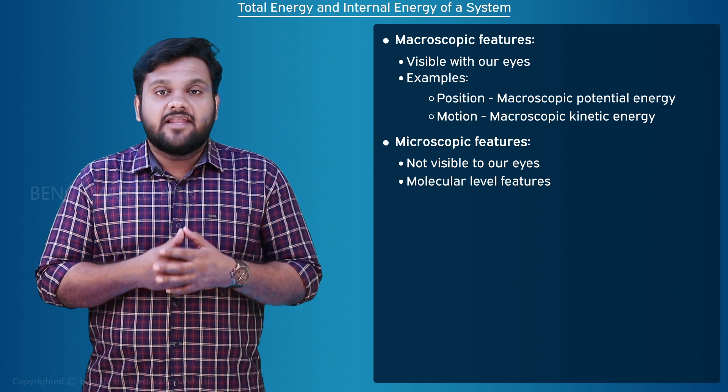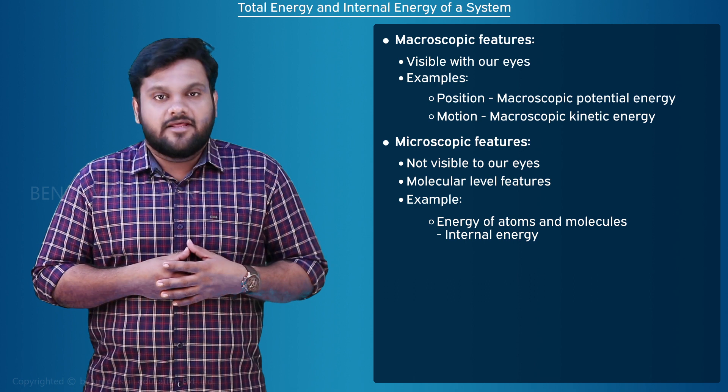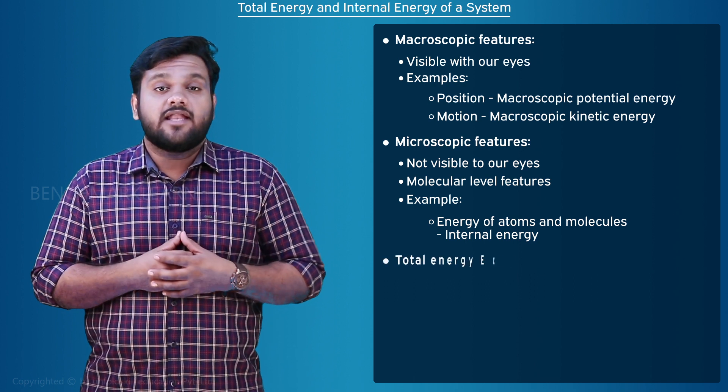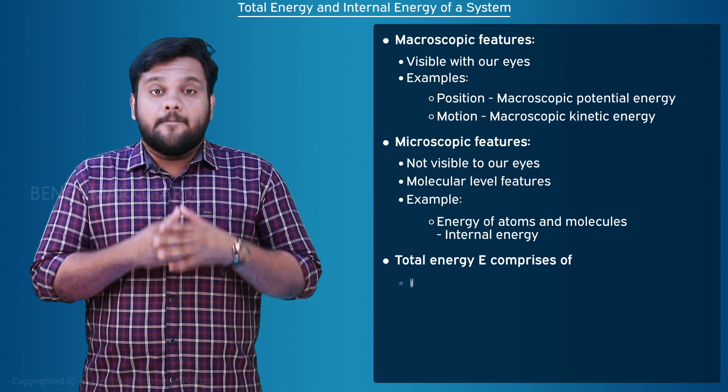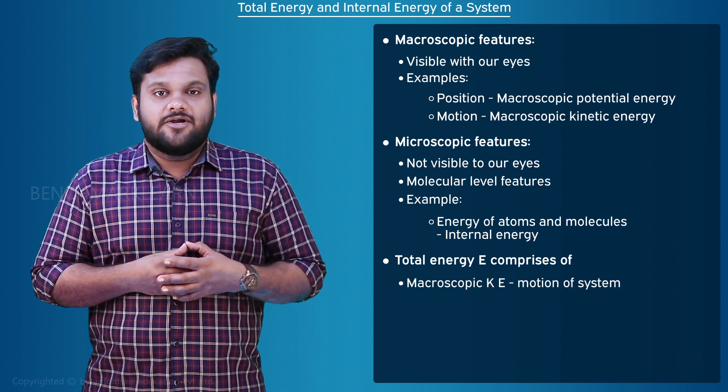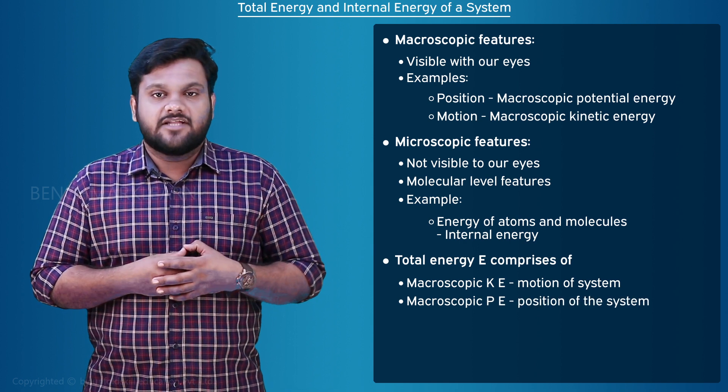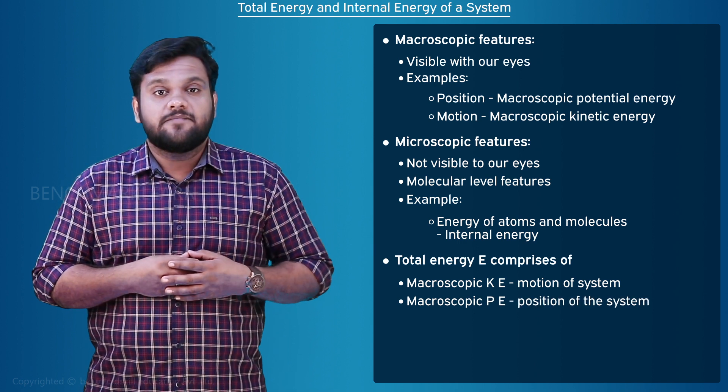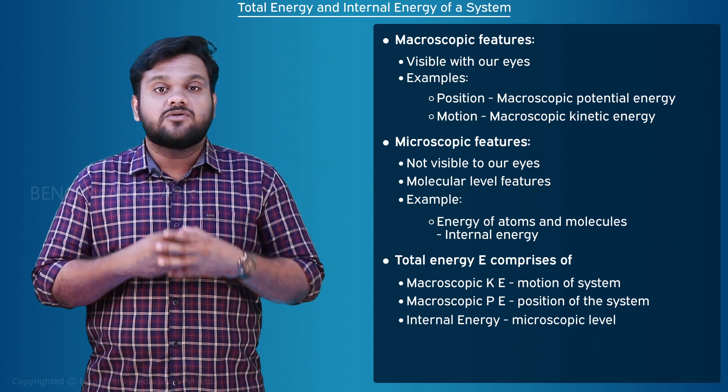Atoms and molecules have energy associated with them and it is called the internal energy. Then the total energy capital E of the system consists of macroscopic kinetic energy due to motion of the system, macroscopic potential energy due to the position of the system, and the internal energy of the system at microscopic level.